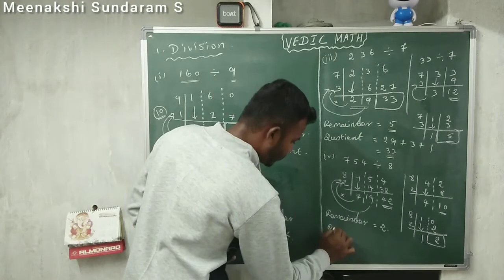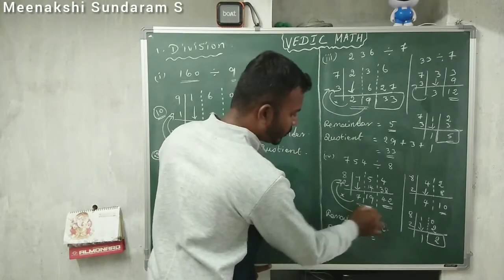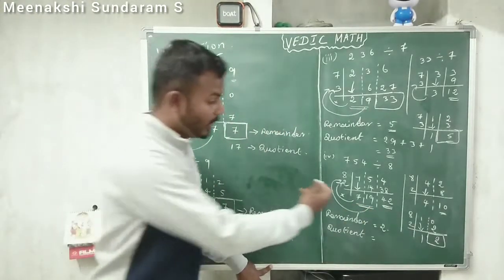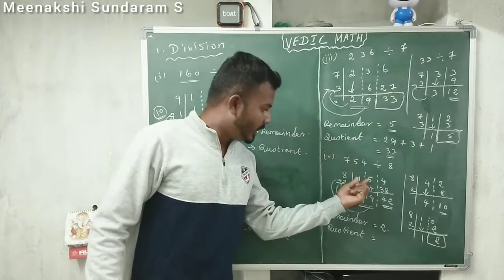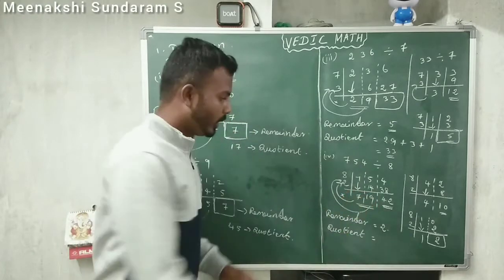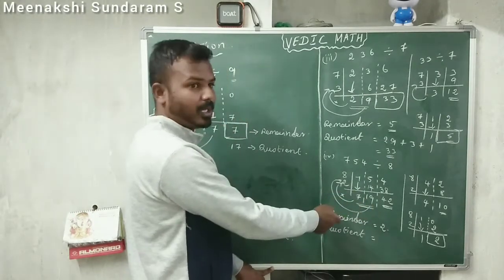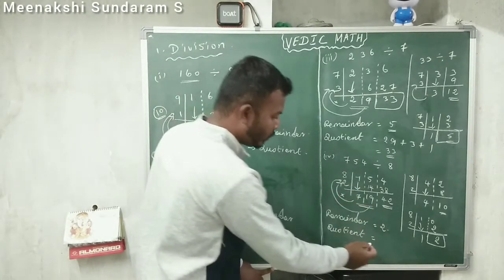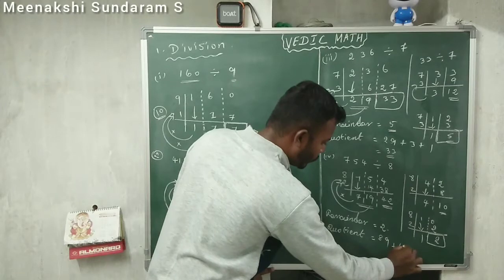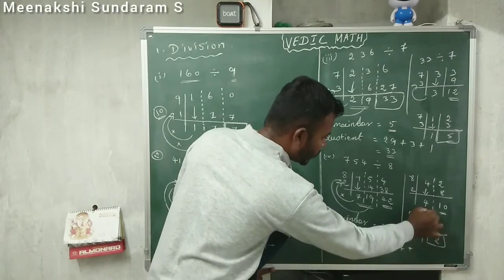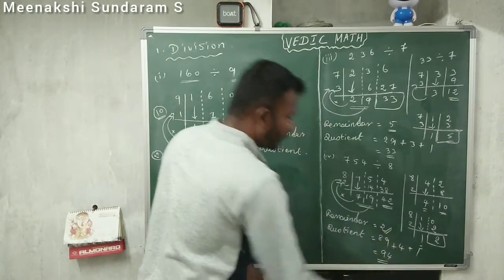The quotient: from the steps we got 7, then 19. Keep in mind — when we pair by 1 digit, the answer block is also 1 digit, but here 19 is 2 digits. So give the carry 1 to the previous block: 7 plus 1 is 8, giving 89. Adding the remaining quotient steps: 4 plus 1 is 5, total becomes 94. So the quotient is 94, remainder is 2.